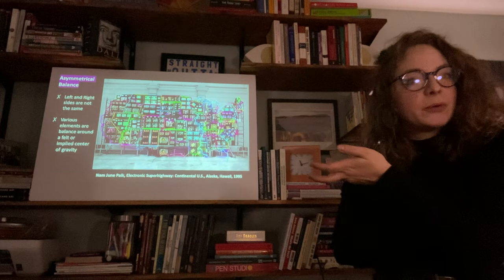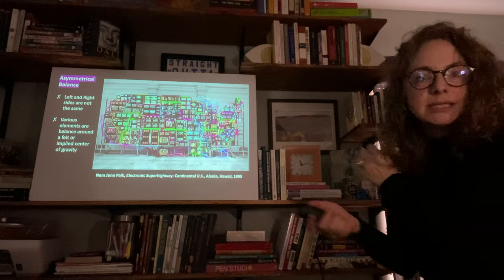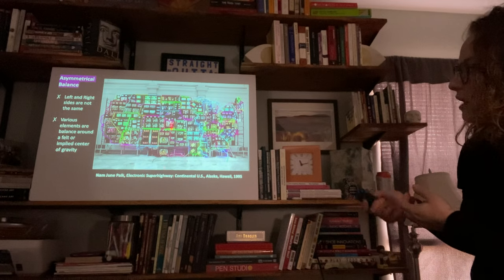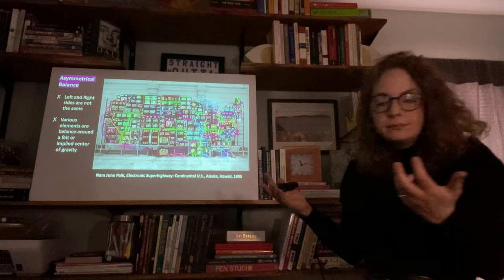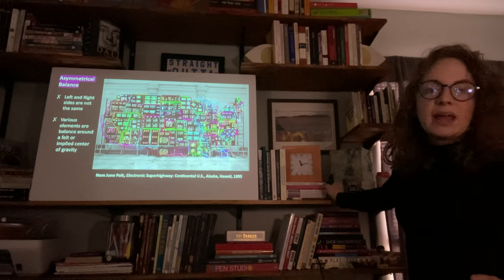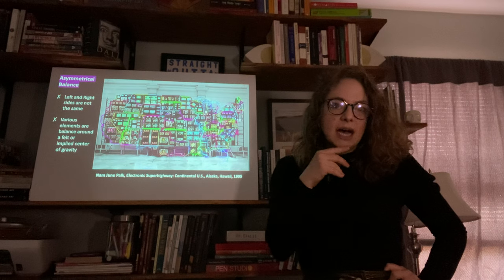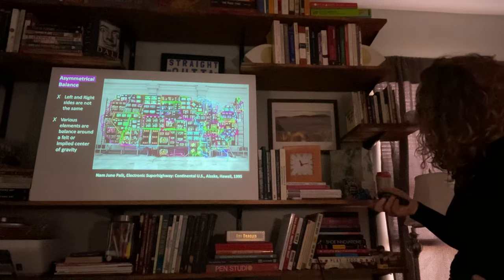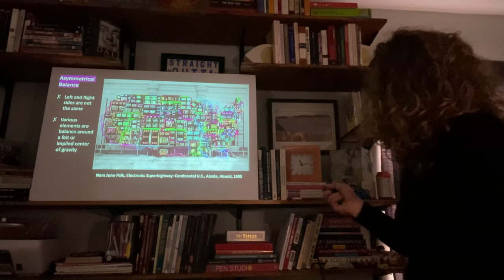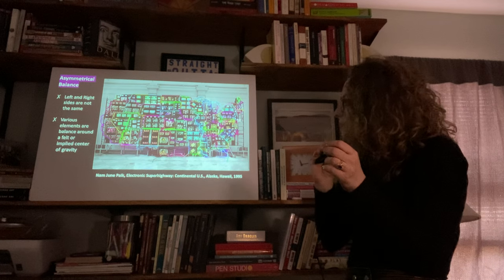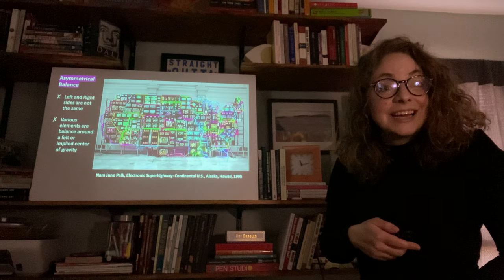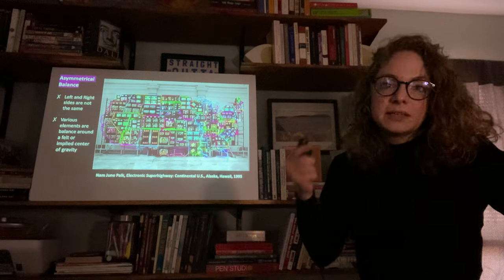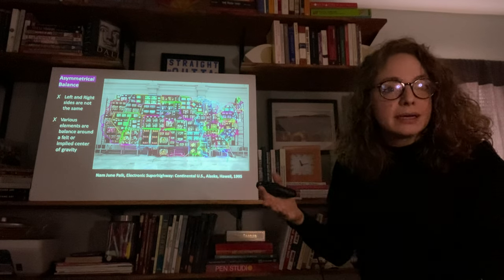Another way to achieve asymmetrical balance is that the left and right sides don't always have to be the same — various elements are balanced around a felt implied center of gravity. This piece by Nam June Paik is 'Electronic Superhighway.' Nam June Paik is a Korean artist who is the father of modern video art. It's an image of the United States where within each state there are little TVs and advertisements representing different things about the United States. This was made back in 1995, so these are the big box TVs, not the flat things we have today.